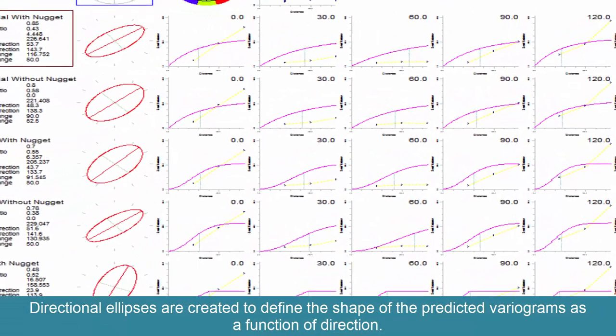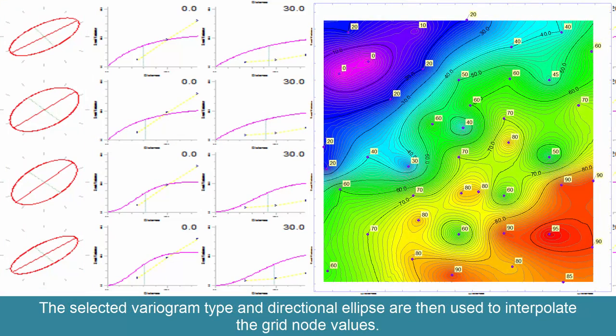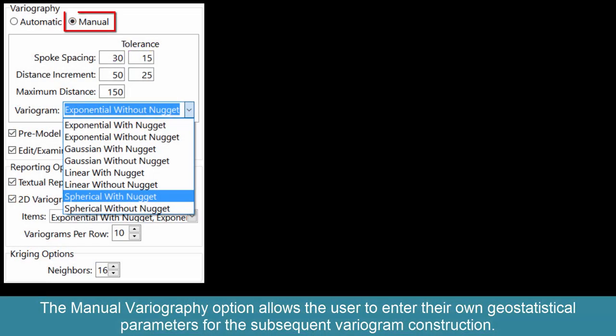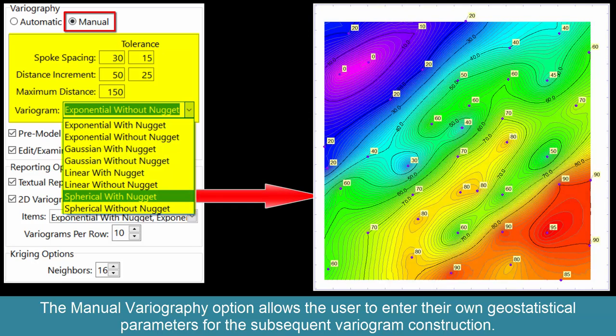Directional ellipses are created to define the shape of the predicted variograms as a function of direction. The selected variogram type and directional ellipse are then used to interpolate the grid node values. The manual variography option allows the user to enter their own geostatistical parameters for the subsequent variogram construction.